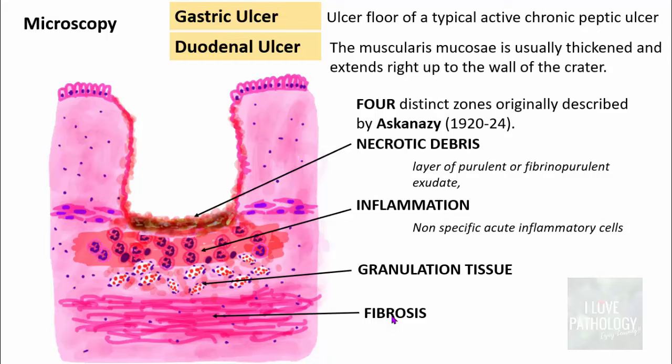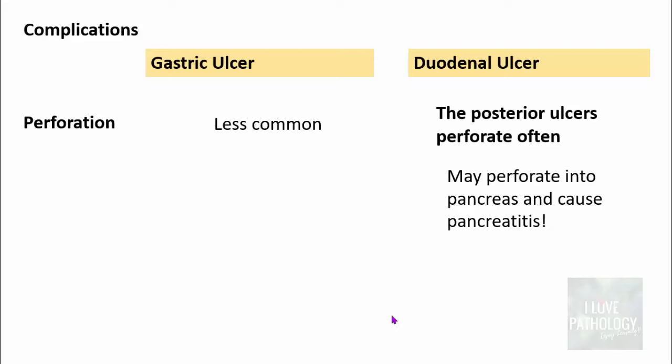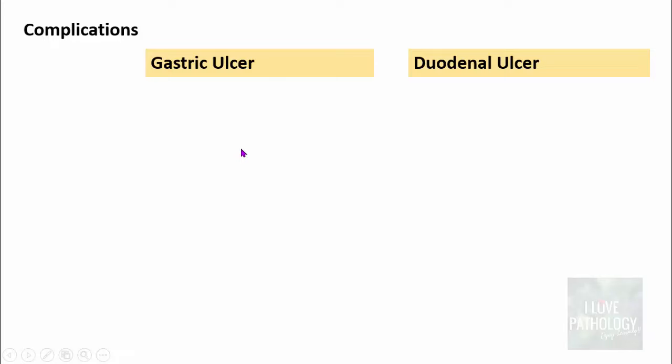Perforation is more common in duodenal ulcer — the posterior ulcers often perforate into the pancreas, causing pancreatitis — whereas perforations are less common in gastric ulcers. The most important complication is the risk of malignant transformation, which is present in gastric ulcers but is extremely uncommon or even absent in duodenal ulcers.